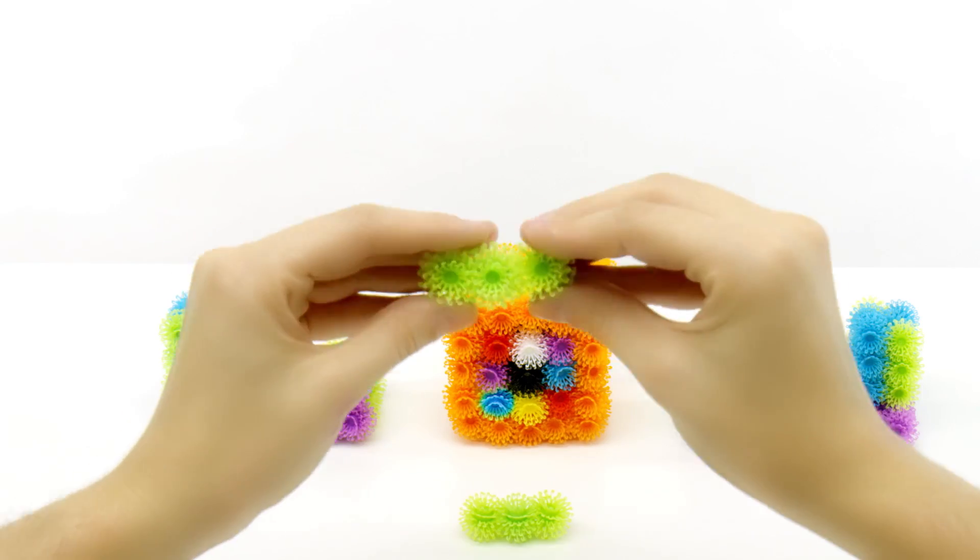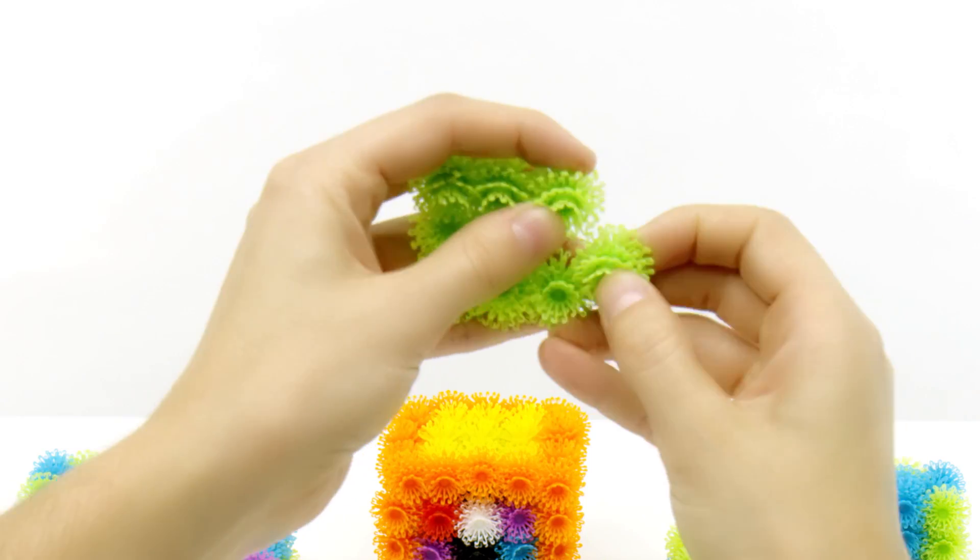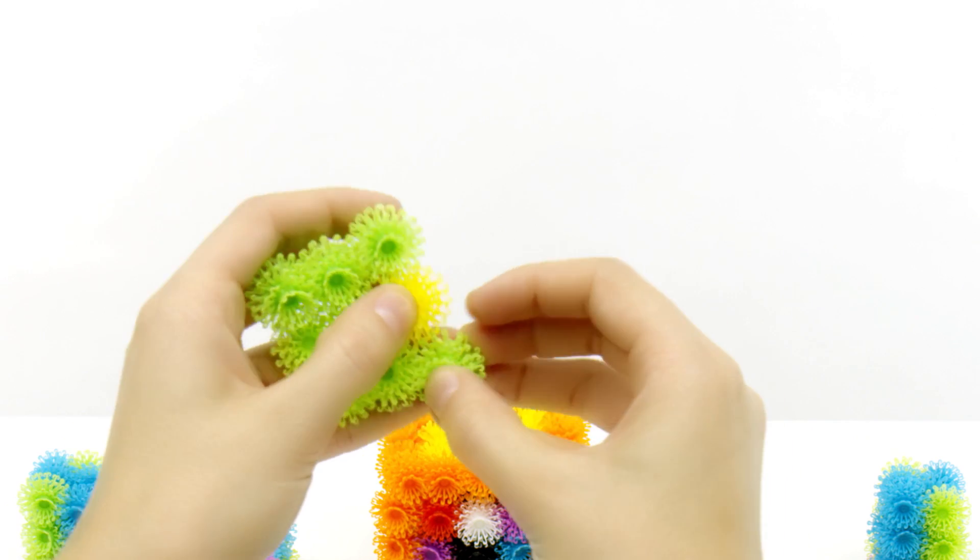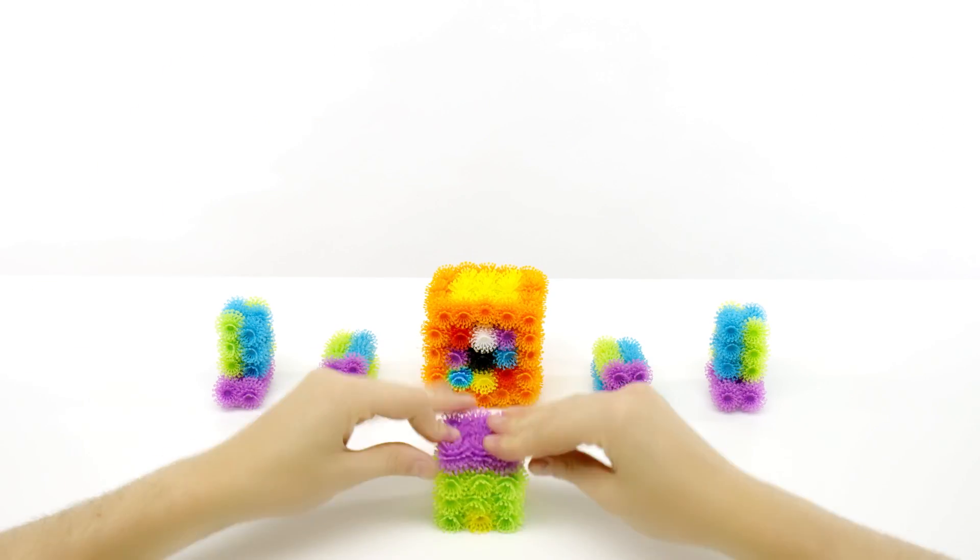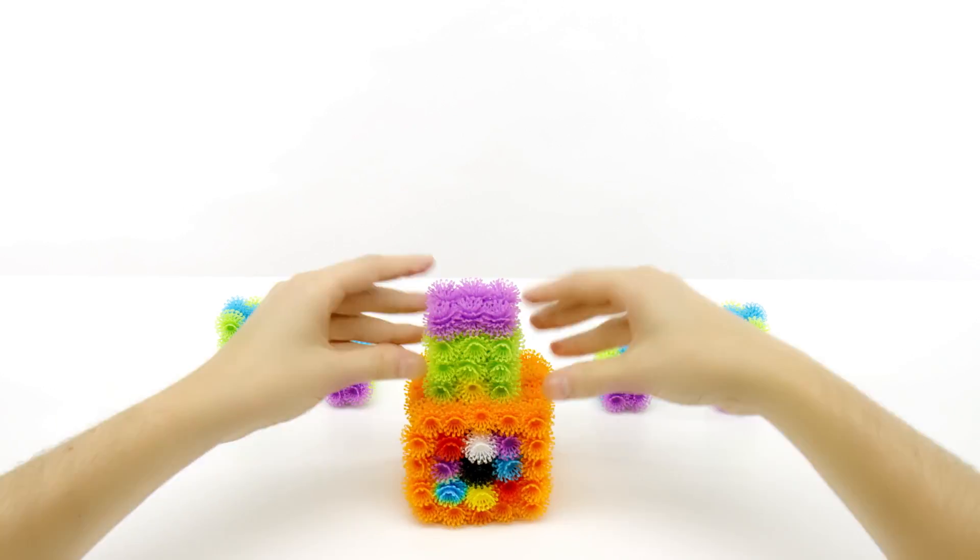Take nine green and make a square. Stack another green square. This time, use eight green and one yellow. Put a purple square on top for the head, then stack the whole head onto the body.